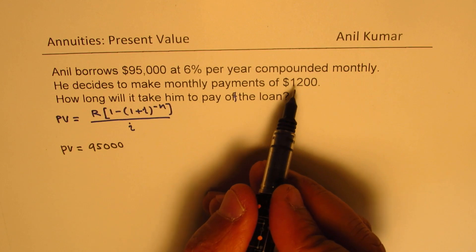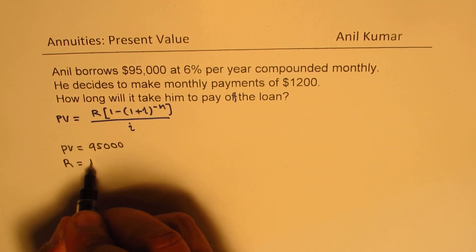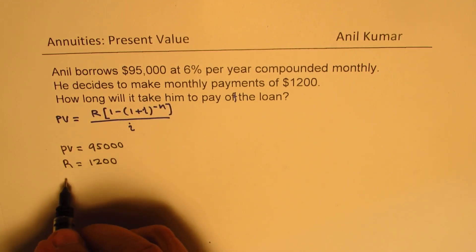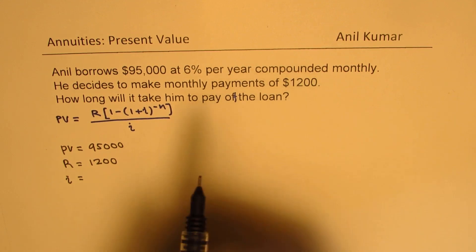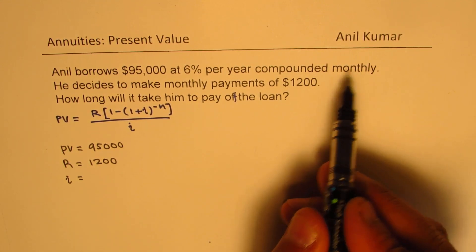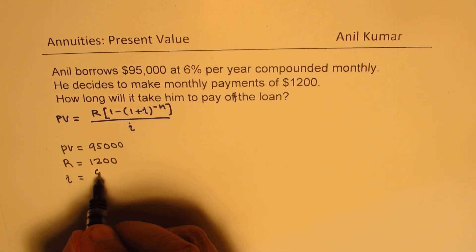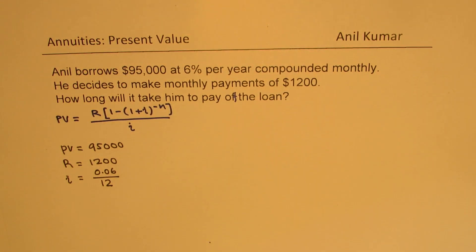r is what you pay monthly — the fixed amount — so r is $1,200. Now we need to find the interest per installment, which is compounded monthly. There are 12 months in a year, so 6% means 0.06 divided by 12, and that becomes our interest rate.